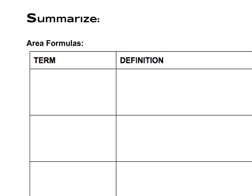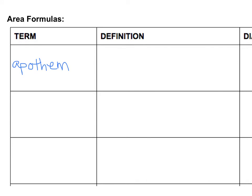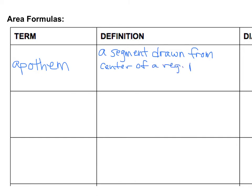In your first box, we're going to write the word — I'll spell it and then say it for you: a-p-o-t-h-e-m — apothem. The definition is in your book, but simply put, it's a segment found in a regular polygon. It is the segment drawn from the center of a regular polygon that is perpendicular to a side of it.